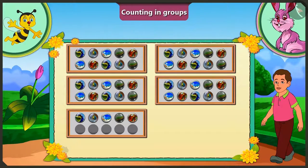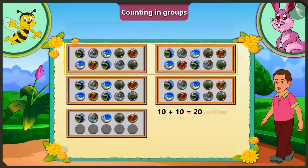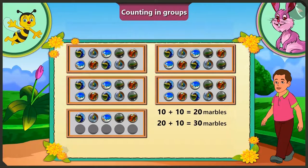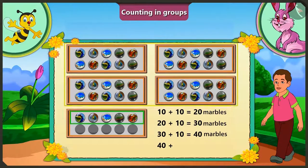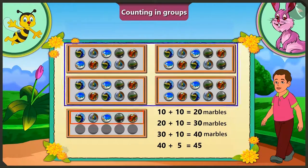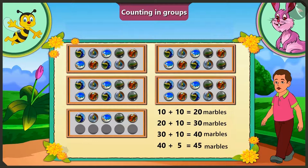Here we have ten and ten — twenty; twenty and ten — thirty; thirty and ten — forty; forty and five — forty-five marbles in total. Well done honey.